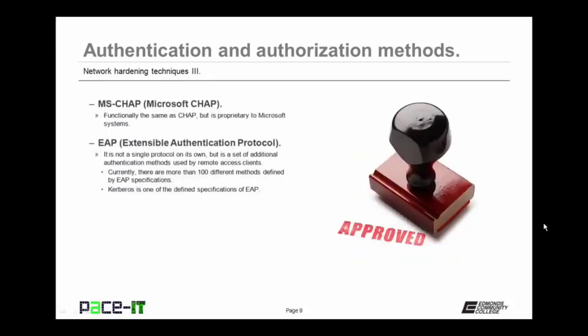There's also MSCHAP — functionally the same as Challenge Handshake Authentication Protocol, but it is Microsoft's proprietary implementation of it. You might also implement one of the forms of Extensible Authentication Protocol, or EAP. It's not a single protocol on its own, but a set of additional authentication methods used by remote access clients. Currently, there are more than 100 different methods defined by the EAP specifications. One of the more popular is Kerberos.